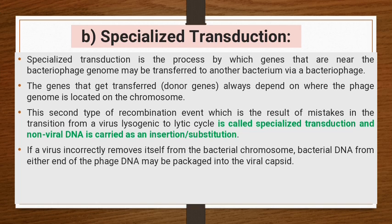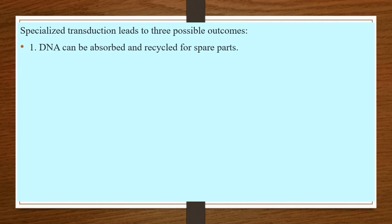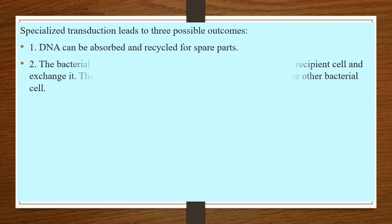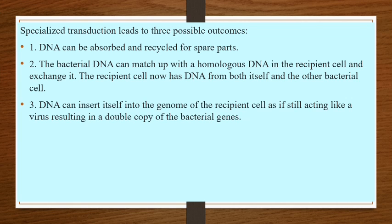In specialized transduction, if a virus incorrectly removes itself from the bacterial chromosome, bacterial DNA from either end of the phage DNA may be packaged into the viral capsule. Specialized transduction leads to three possible outcomes: DNA can be absorbed and recycled for spare parts; the bacterial DNA can match up with homologous DNA in the recipient cell and exchange it, so the recipient cell now has DNA from both itself and the donor; or the DNA can insert itself into the genome of the recipient cell, resulting in a double copy of the bacterial genes.